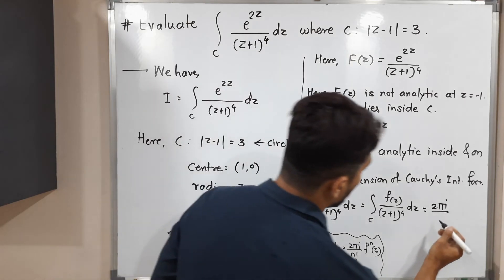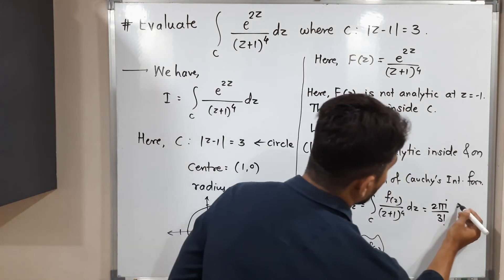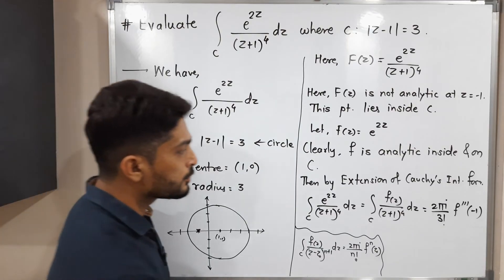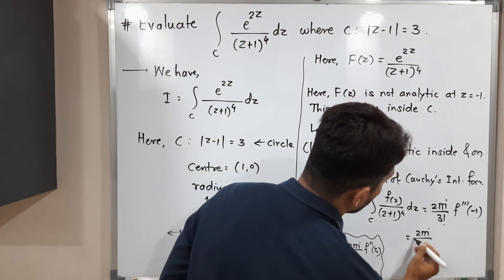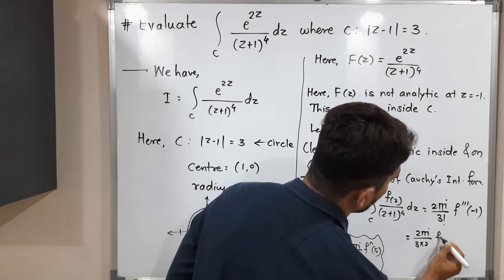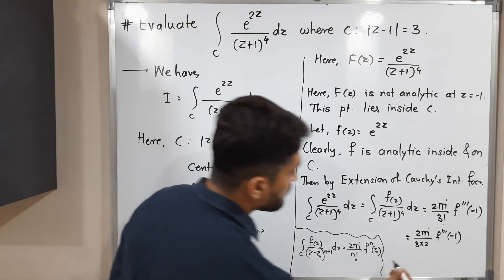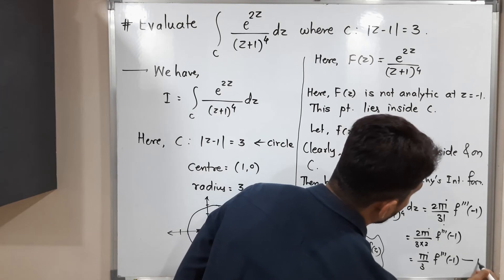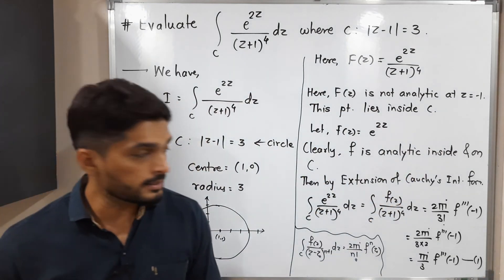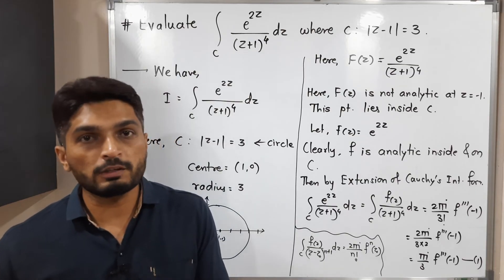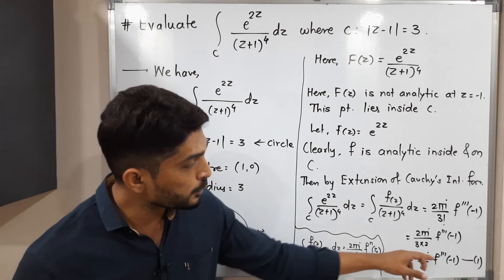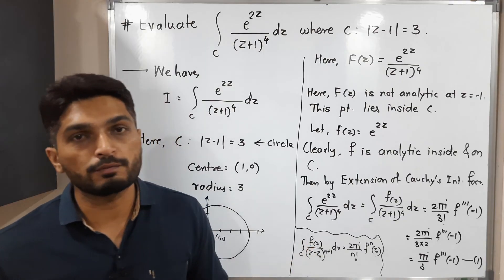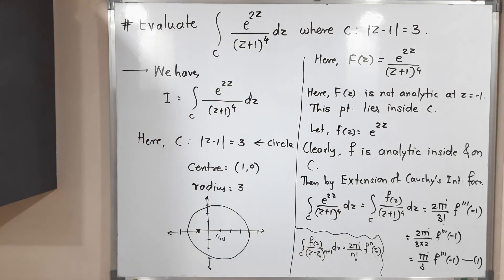Putting n = 3 and z₀ = −1, we get 2πi / 3! times f'''(−1). Since 3! = 3 × 2 × 1 = 6 and 2/6 simplifies, this equals πi/3 times f'''(−1). Let us call this equation (1). We cannot find its value directly since we need the third derivative, so first we compute f'''(z) and then evaluate at z = −1.